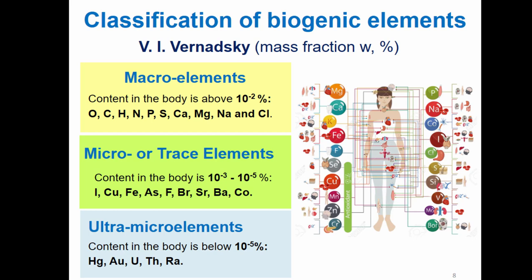Classification of biogenic elements by Vernadsky. His main criteria was the mass fraction, or the content of elements in the human body. He has three classes. First class is macroelements, whose content in the body is above 10 to the power minus 2%. These 10 elements are: oxygen, carbon, hydrogen, nitrogen, phosphorus, sulfur, calcium, magnesium, sodium, and chlorine. Micro or trace elements have content of 10 to the power minus 3 to 10 to the power minus 5. These include iodine, copper, iron, arsenic, fluorine, bromium, strontium, barium, and cobalt — these are considered trace elements.